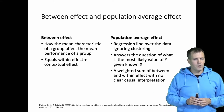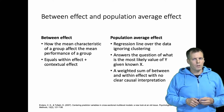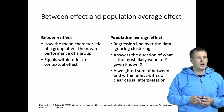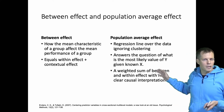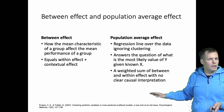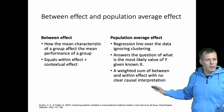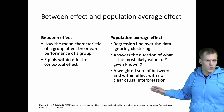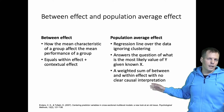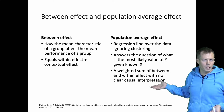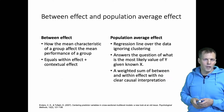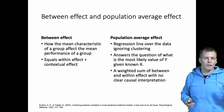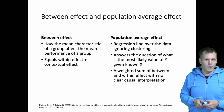The population average effect is simply a regression line over the data, ignoring all clustering. It answers the question of what is the most likely value of y given a known x. It is a weighted sum of the within effect and the between effect, or the within effect and the contextual effect, and it doesn't really have a clear causal interpretation. So the population average effect is more useful for predictive applications than the within effect and the contextual effect.